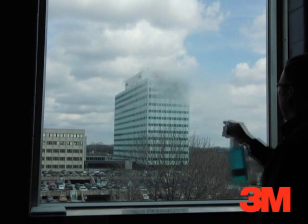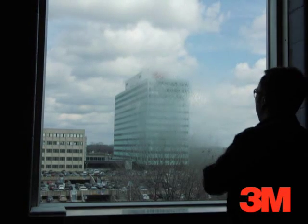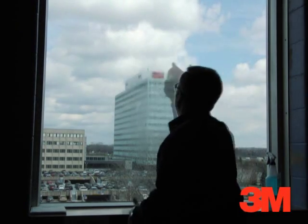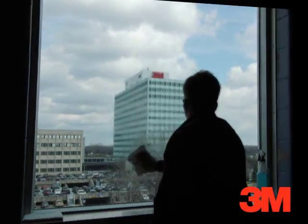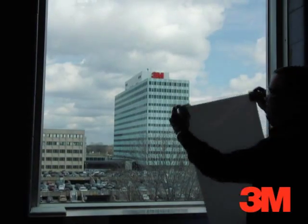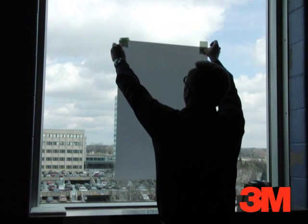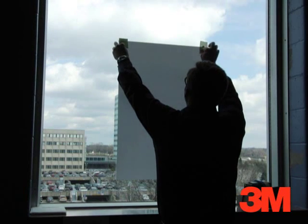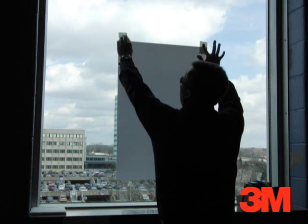For window application, first clean the substrate and allow it to dry before applying the film. Next, apply a couple pieces of tape to the top two corners to hang the film on the window. This provides an easy method for precise placement.